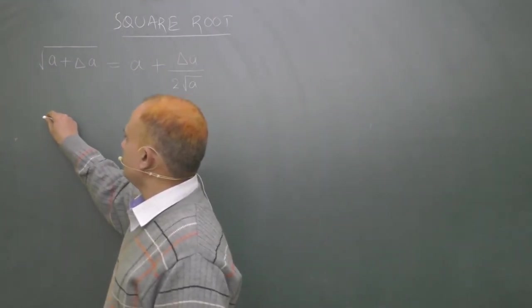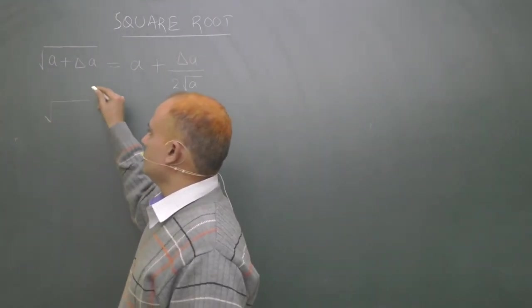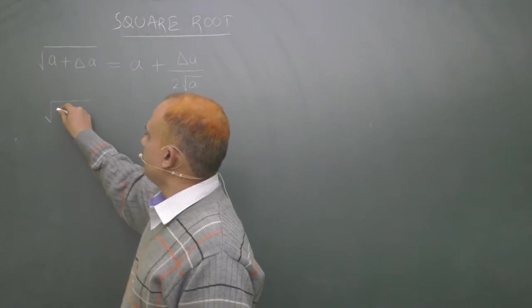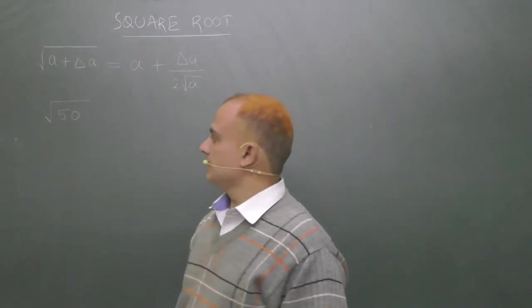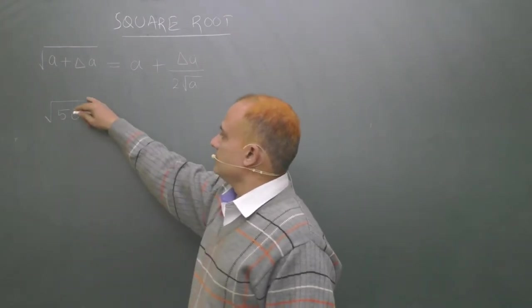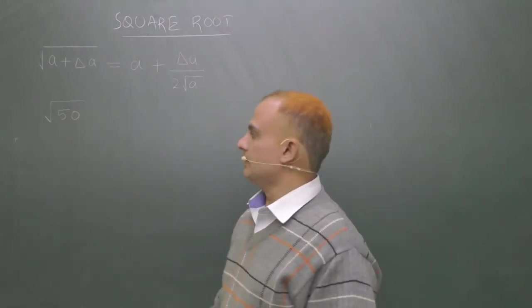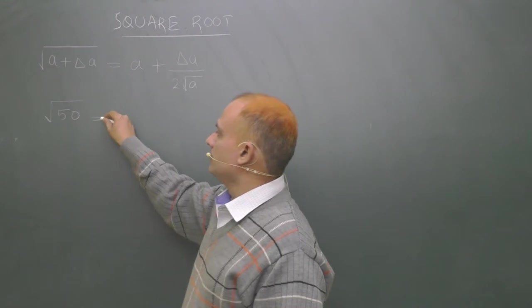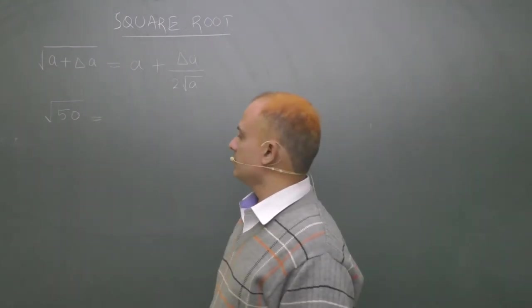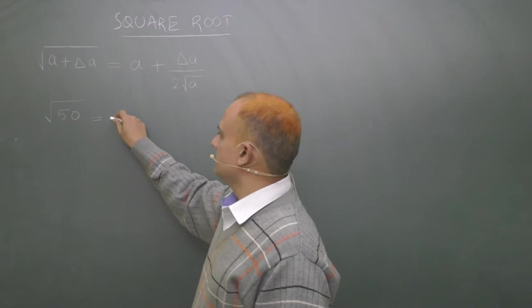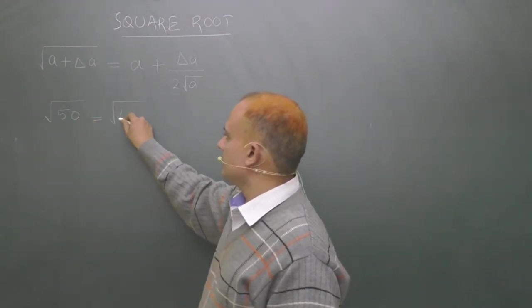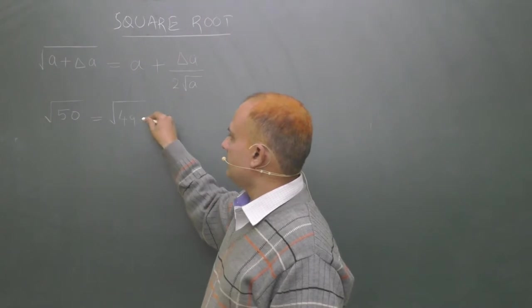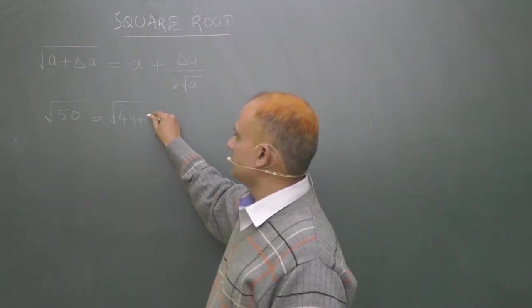Suppose you wish to find square root of 50. But do you know square root of 50? No. But you know square root of a number which is very close to this, which is 49. So split this 50 into two parts: 49 plus 1.